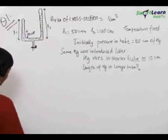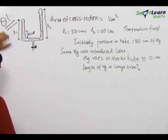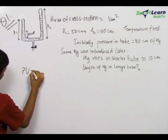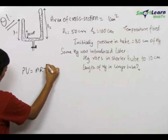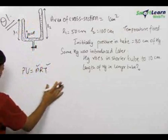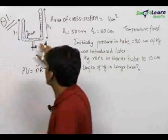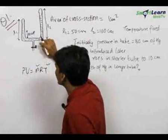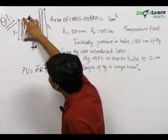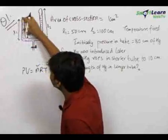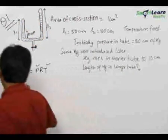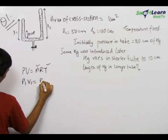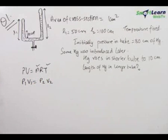For solving this question, let us first analyze what happens to the gas in the smaller tube. We write PV = NRT. The temperature of the gas is fixed for the smaller tube, and the number of moles is also fixed — whatever moles were there initially also exist now. When the mercury is inserted, the gas already in the smaller tube gets compressed in this region. So we can write P1V1 = P2V2, which is also known as Boyle's law.